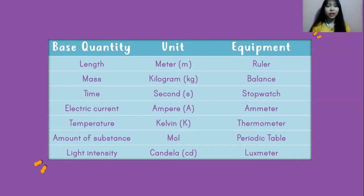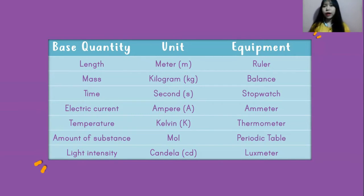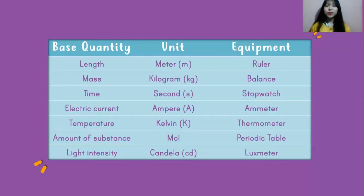The first one is length, and the unit is meter — we can use a ruler to measure length. We also have mass; the unit is kilogram, and we use a balance to measure mass. Next, we have time; the unit is second, and we use a stopwatch. Next, we have electric current; the unit is Ampere, and the equipment is an ammeter. Next is temperature; the unit is Kelvin, and the equipment is a thermometer. Next is amount of substance; the unit is mole — we can use a periodic table to find the molecular mass. And the last one is light intensity; the unit is candela, and we use a lux meter to measure light intensity.